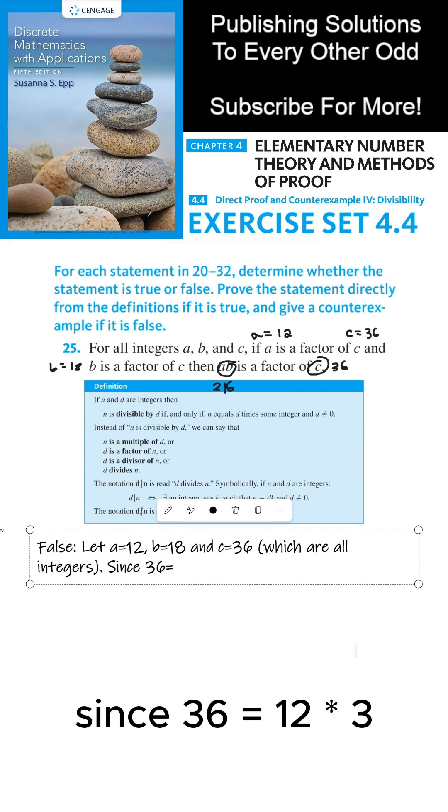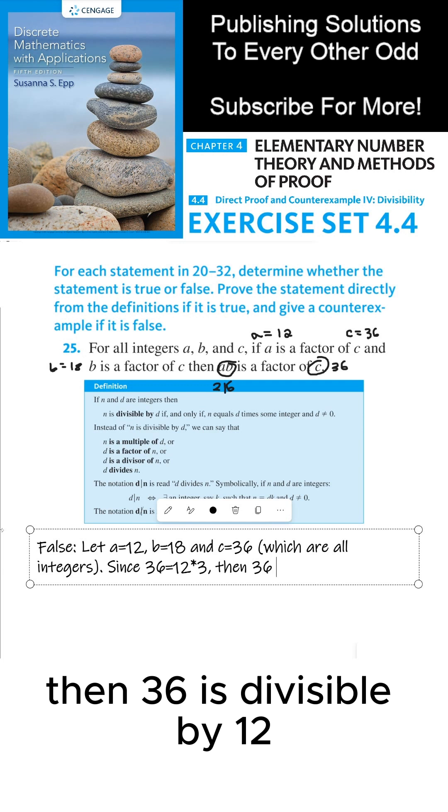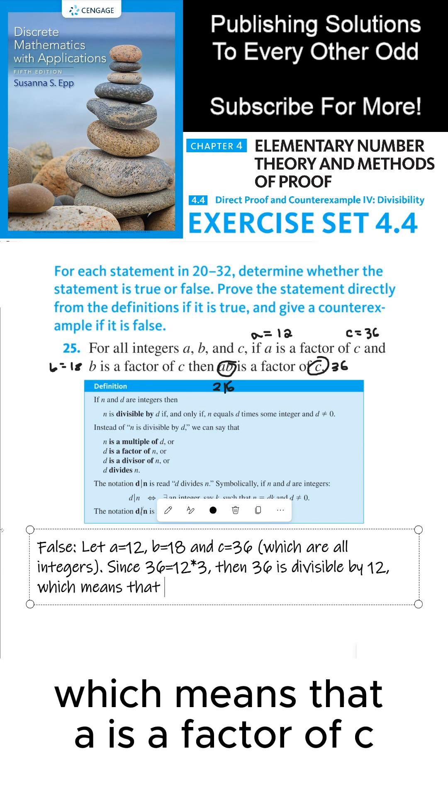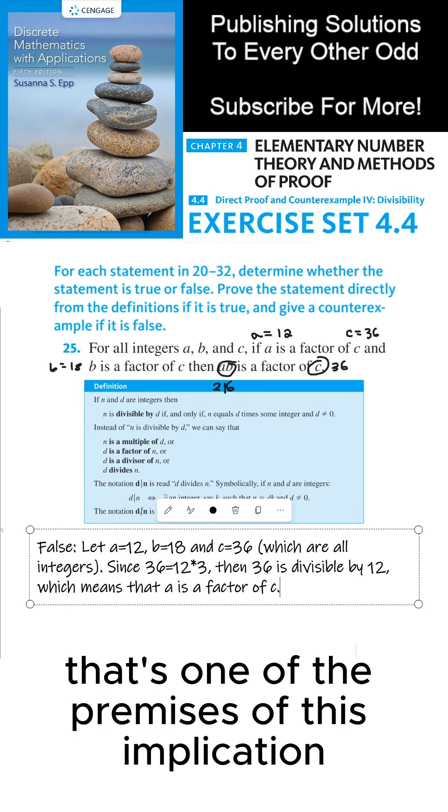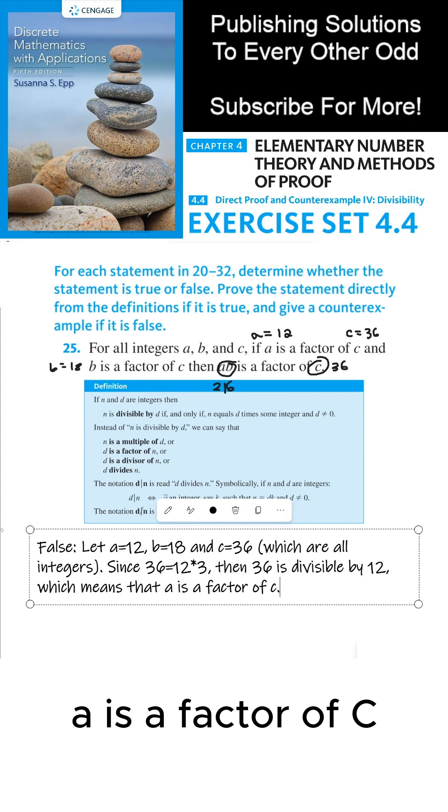Since 36 equals 12 times 3, then 36 is divisible by 12, which means that a is a factor of c. That's one of the premises of this implication. a is a factor of c.